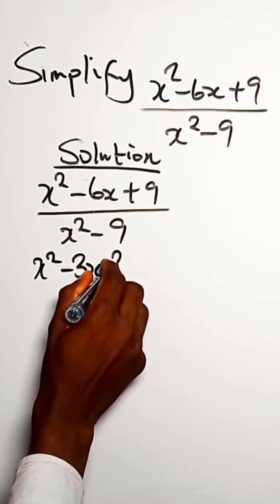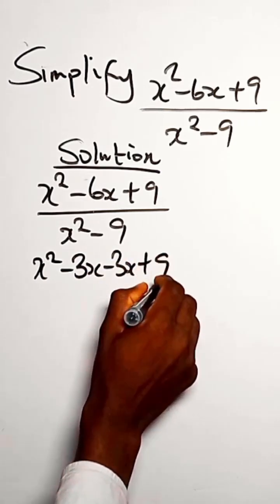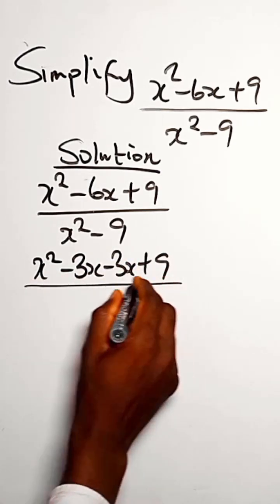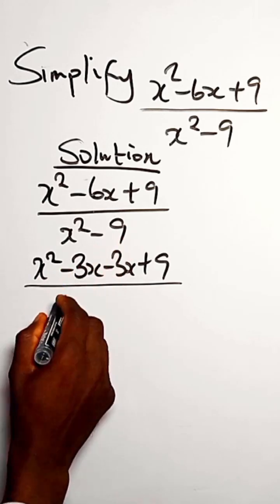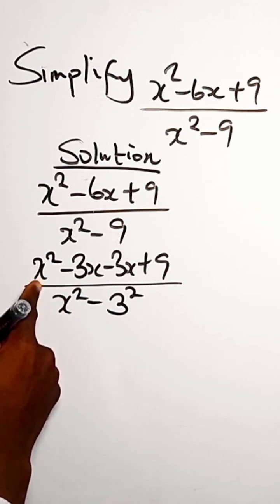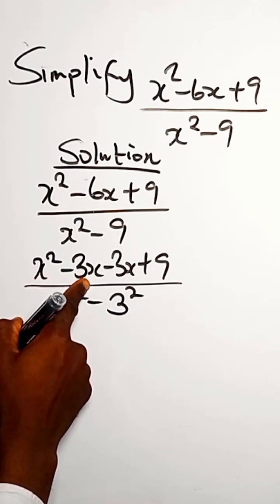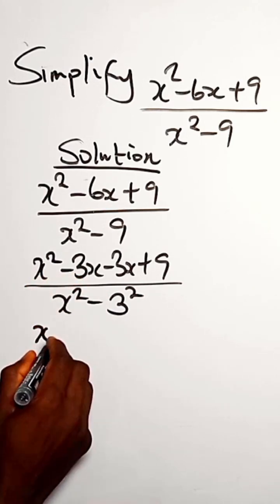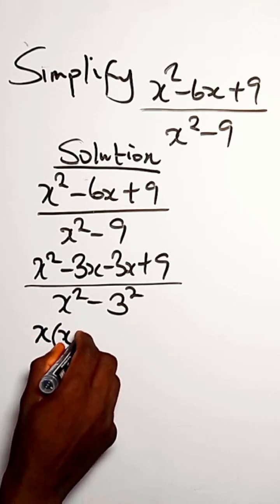So let us go with 3. We have x² minus 3x minus 3x plus 9. For x² - 9, we can write it as x² - 3².